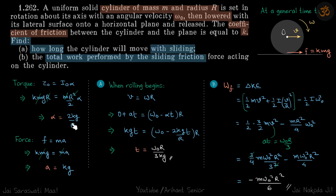You can see a is not equal to alpha r. Now as discussed, v will increase and omega will decrease until v becomes equal to omega r. That is the condition for rolling.